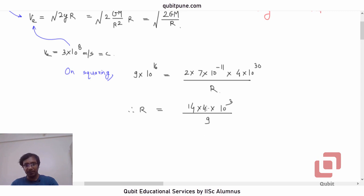7×14, 14×4, ×10 raised to 16 plus 11... 16 plus 11 is 27, 27, that is right. Therefore, r is equal to 56/9 ×10^3.